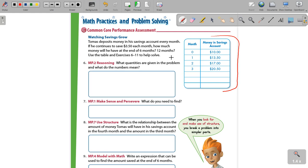If he continues to save $3.50 each month, how much money will he have at the end of six months? How about the end of 12 months? Use the table and exercises six through 11 to help. Now, I believe I only did six through eight for you guys, so don't worry about the rest of that.